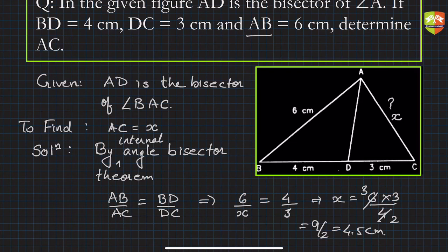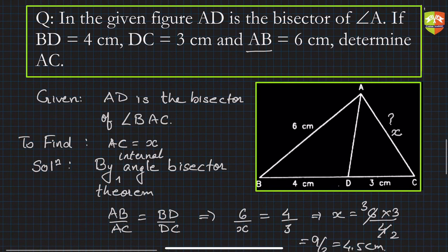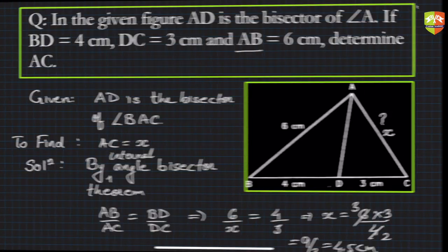Very very straightforward question. The triangle is given, one side is given, and the two divisions made by the angle bisector is given. You have to find out the other adjacent side, so direct application of angle bisector theorem.